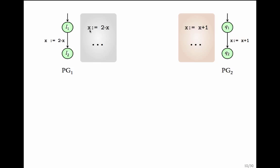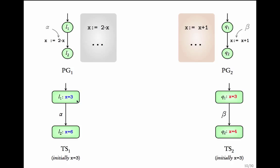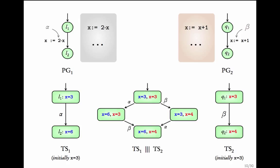Consider two parallel programs working on a shared variable X. Program 1 assigns X to 2X. Program 2 assigns X to X plus 1. These are the corresponding program graphs. Let us look at the transition systems starting with X equal to 3. The initial state L1, X equal to 3, on action alpha (X going to 2X), moves to L2, X equal to 6. For program 2, initial state Q1, X equal to 3, on action beta, becomes Q2, X equal to 4.